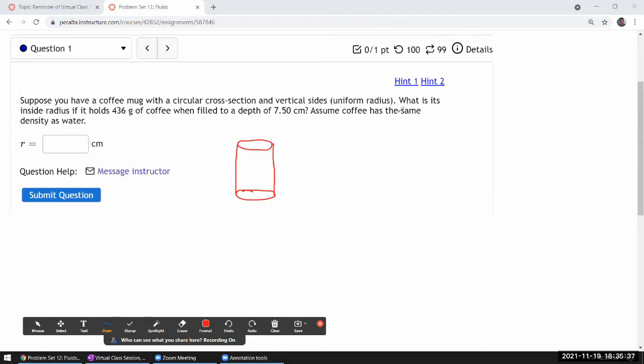Uniform radius. What is the inside radius if it holds this much coffee when filled to a depth? I'll just say this is the entire depth of this much height of water or of coffee. But it says coffee has the same density as water. Okay, it's such a roundabout way of asking.